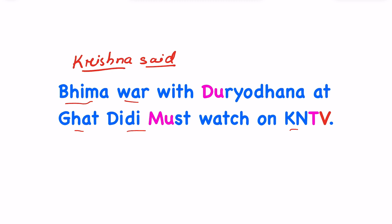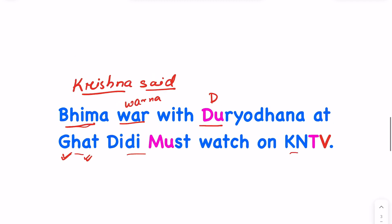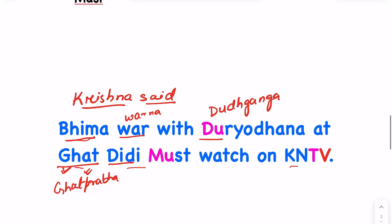So 'Ghat' is the bank of the river, which we call Ghat. Bhima stands for the Bhima river. 'Var' from 'war' stands for Varna. From Duryodhana, 'DU' stands for Dudganga. 'Ghat' stands for Ghataprabha. 'Didi' stands for Dindi. From 'Must', M-U-S stands for Musi.